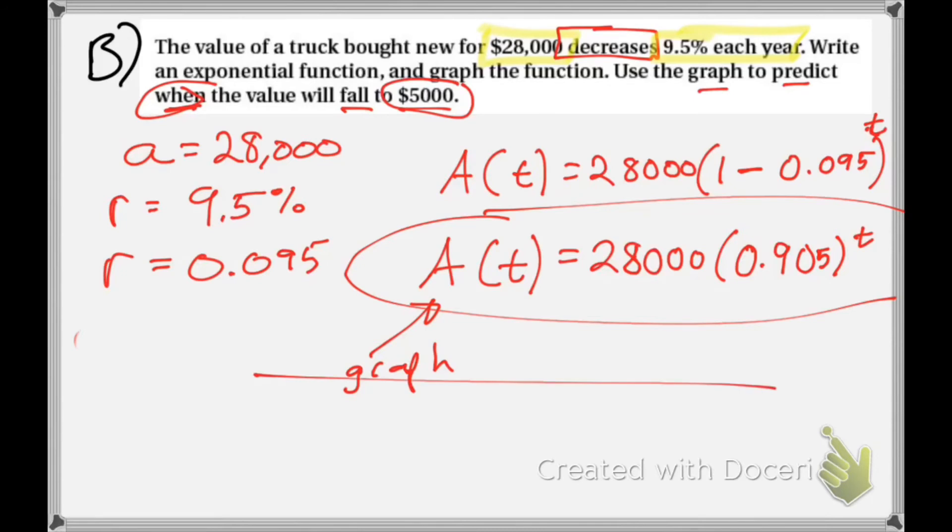So once I plug into my calculator, it will take about 17.3 years for the value of the truck to drop to $5,000.